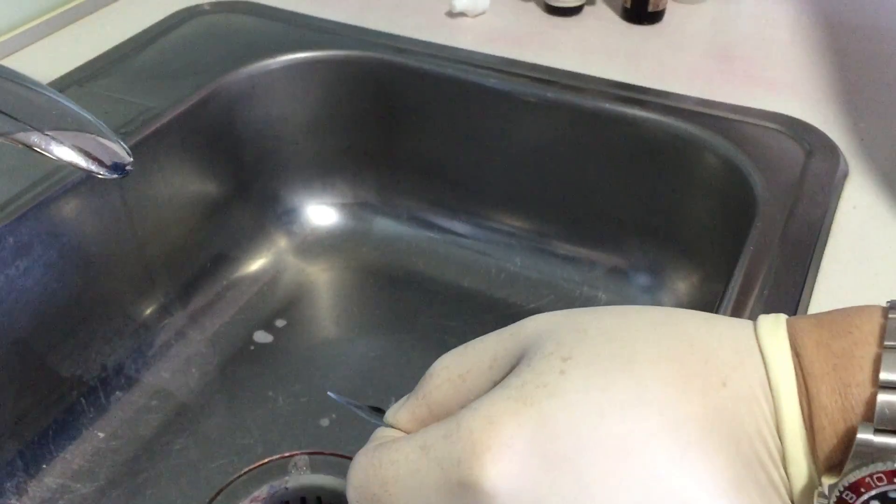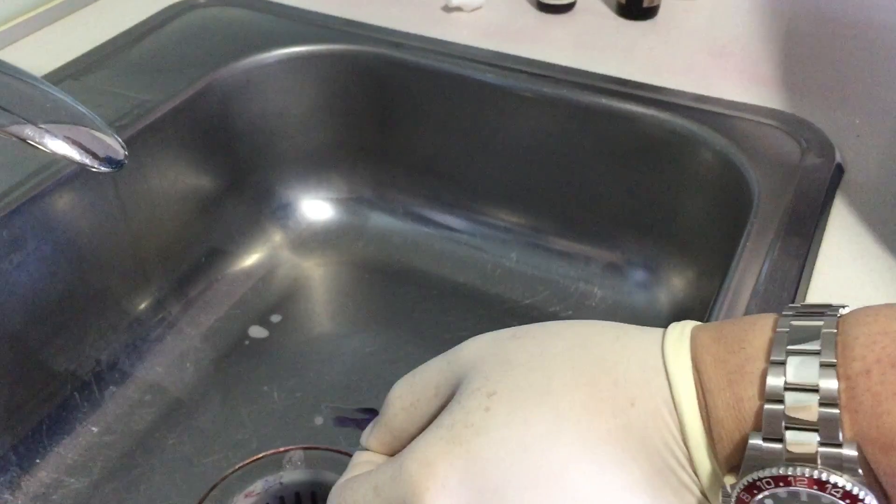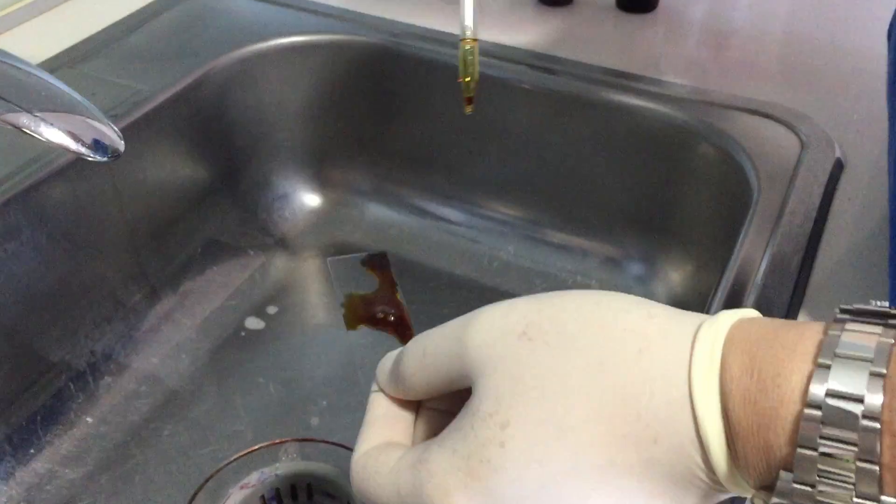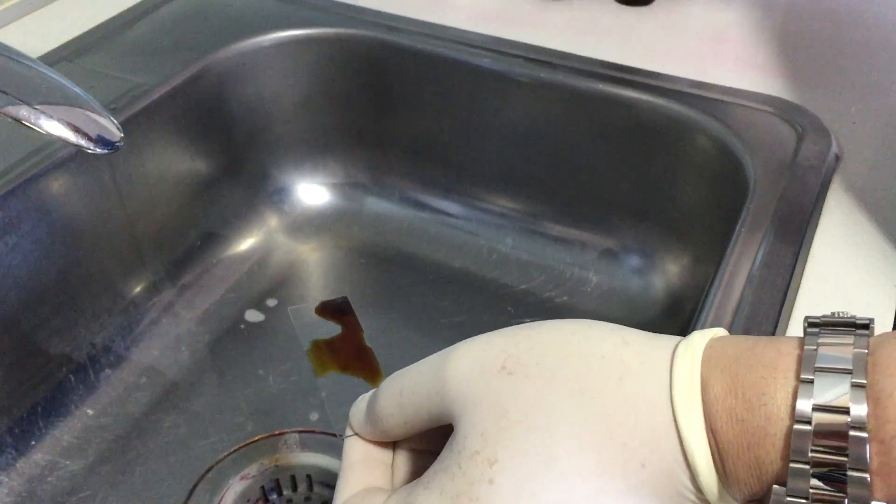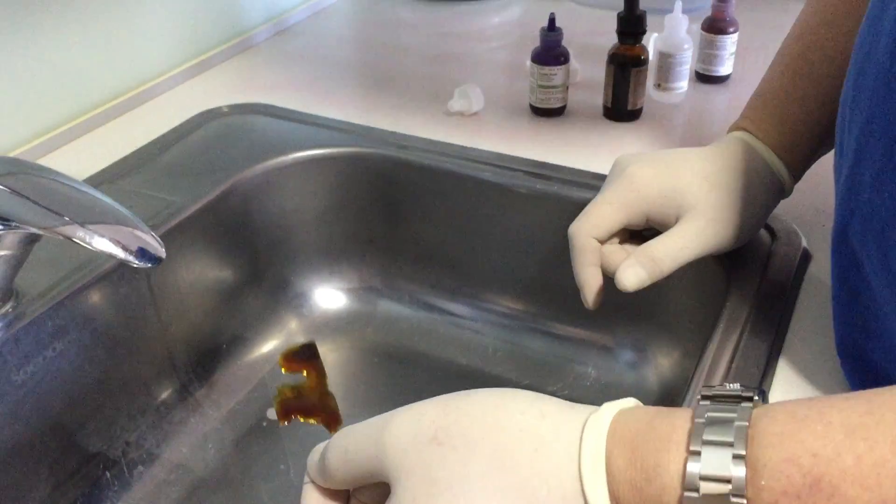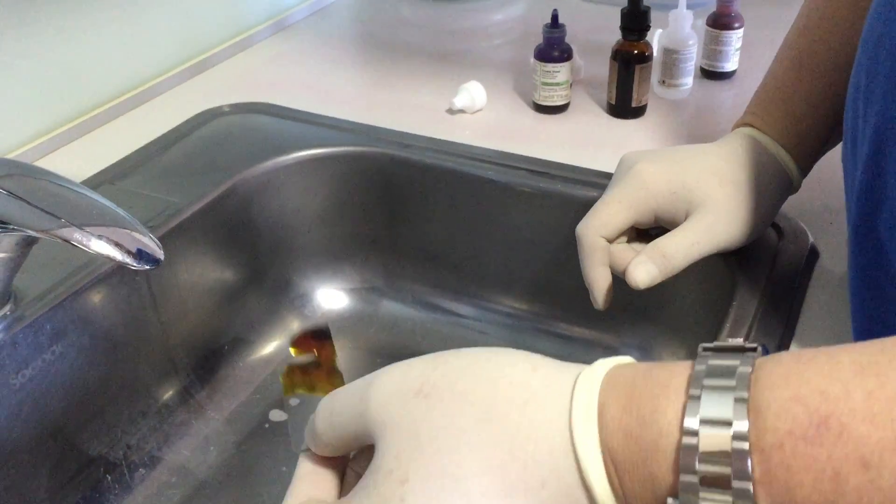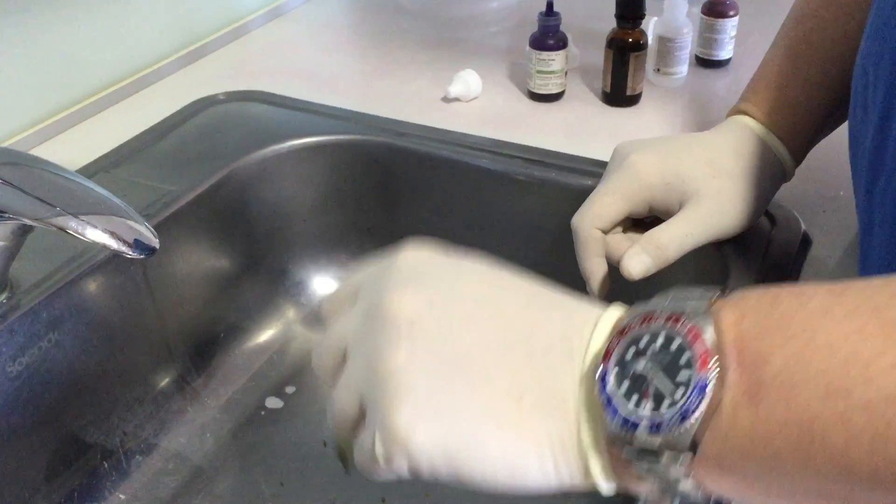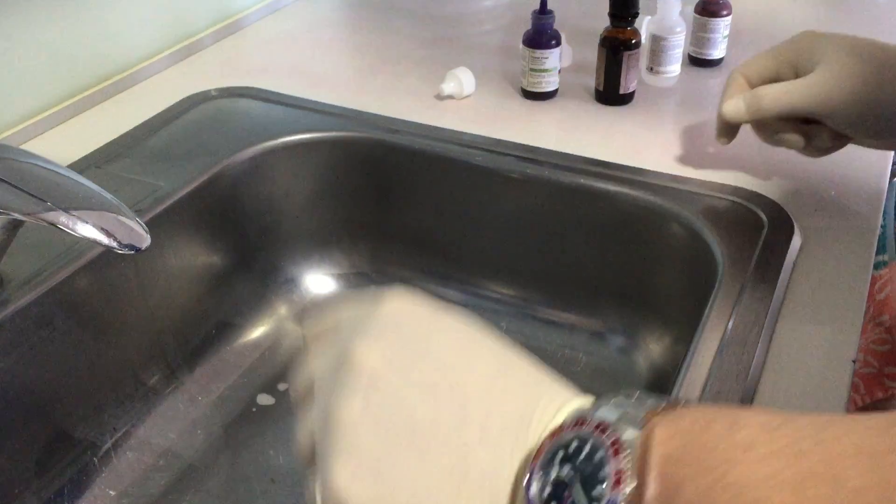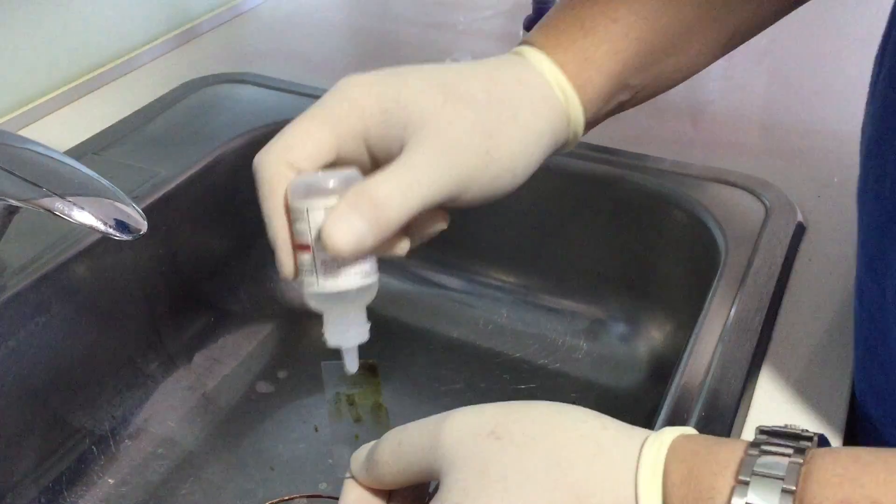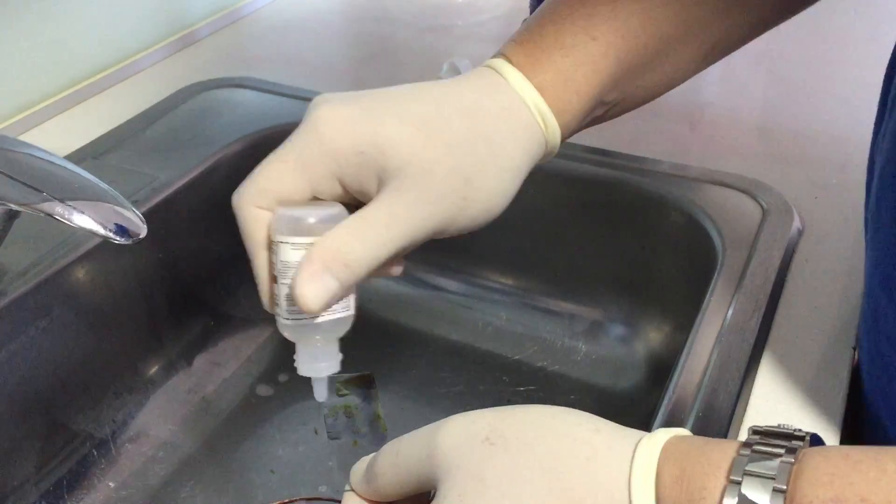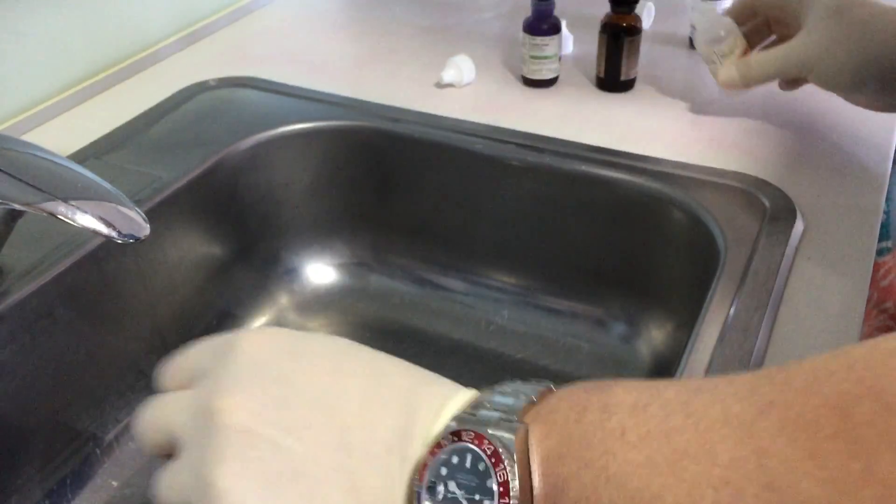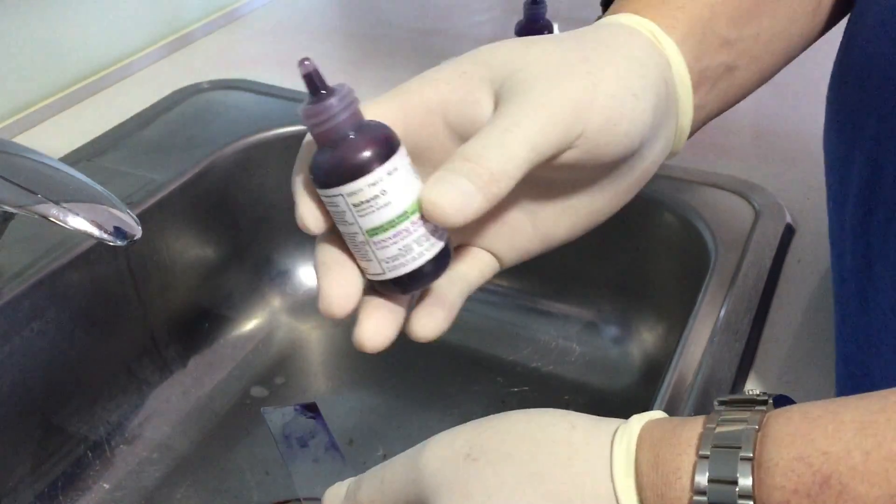Okay, now we're going to use gram's iodine. The last two days the cells have been quantified already, so I just wanted to show you guys how cells change day to day. Now we're going to use alcohol, and last, safranin.